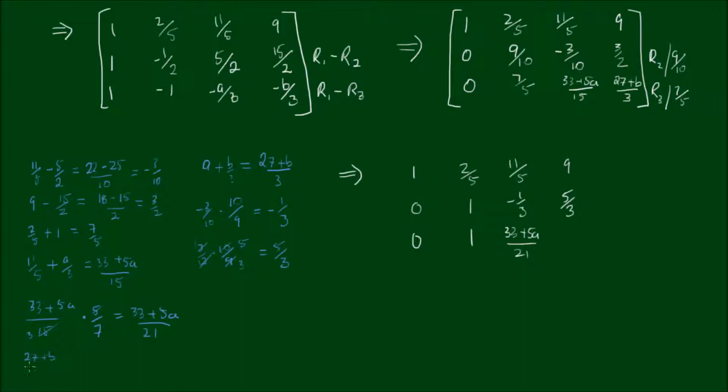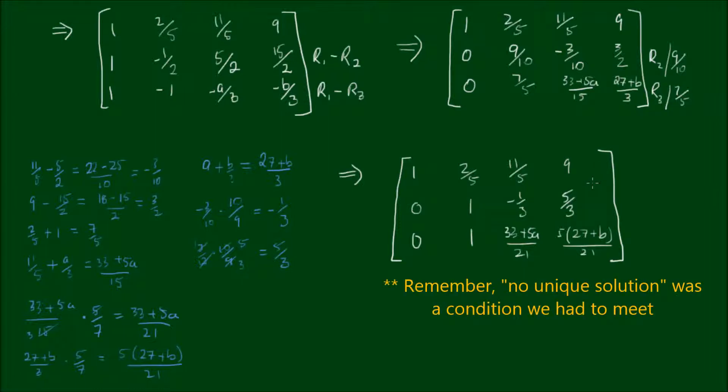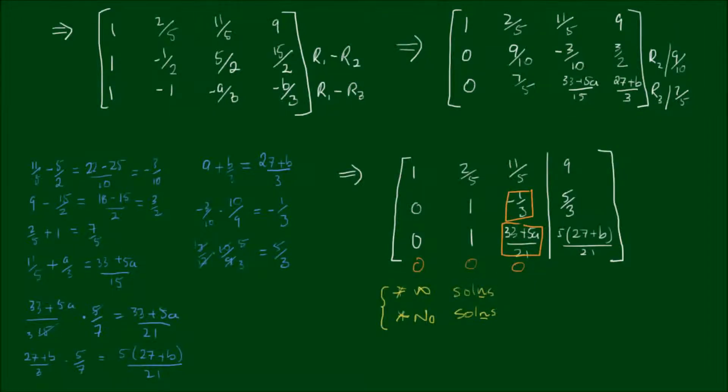Now there is no unique solution to this set of equations. So to satisfy that, remember I said in the beginning, we need to satisfy the conditions that there are an infinite number of solutions or there are no solutions. So to satisfy these conditions, we need the third row elements on the left side of the divider to be 0, 0, and 0. And to achieve that, all I have to do is to make sure that this number here minus this expression here is equal to 0.